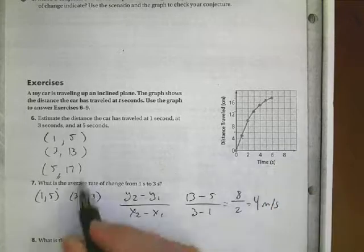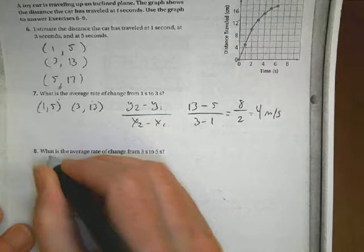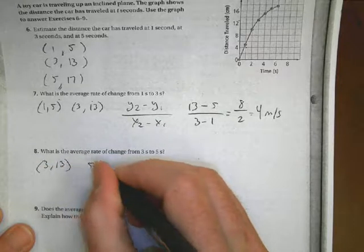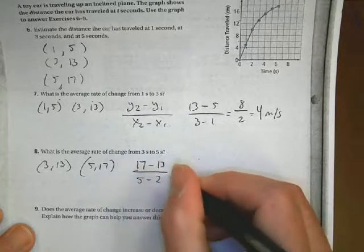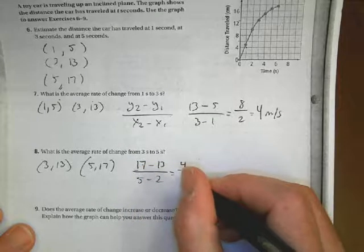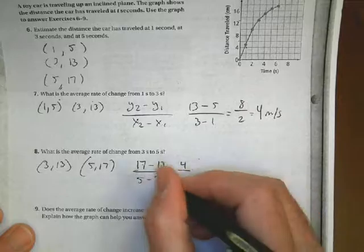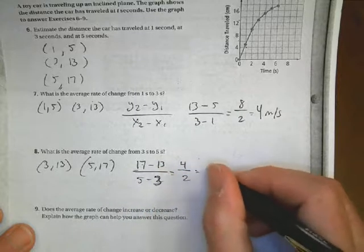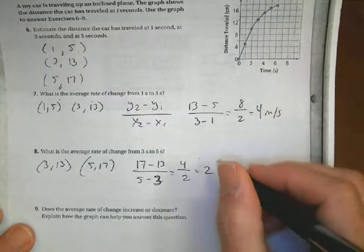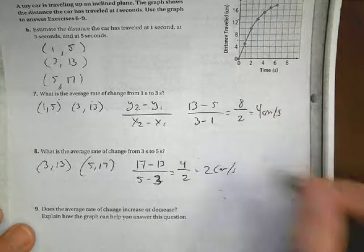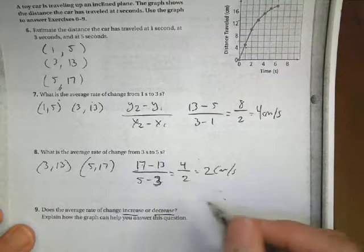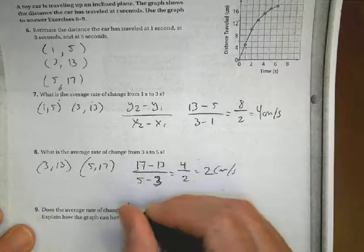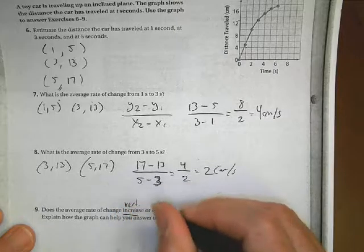Let's take a look at a couple more here. Number 6. We have some points here, and they give you some points. And the first thing I want you to estimate the distance here, and the purpose of that is to give you some points to work with. So they want to know where are we at 1, where are we at 3, where are we at 5. So what I'm going to do is I'm going to look at point 1. I'm going to go up to, there's 4, I'm counting by 2, so that's 6. It's in the middle of 4 and 6, that makes it 5. At 3, we are right here, which is going to be at 13. And at 5, we're going to be right here, which is at 17. So those become the three points I'm going to work with for the next questions. Those are my estimate distances at 1, 3, and 5 seconds.